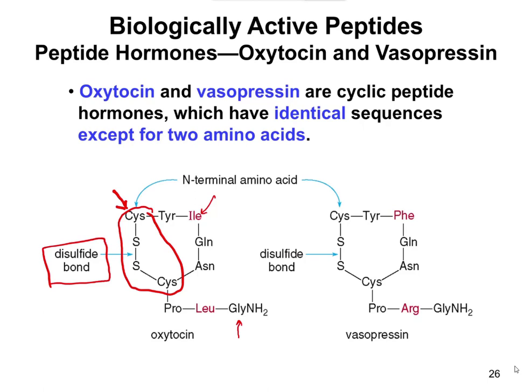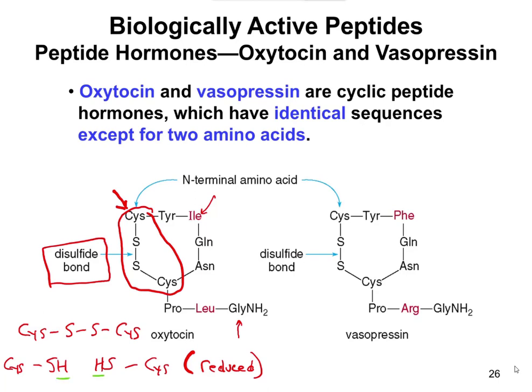Instead of a free SH group, a cysteine usually has an SH bond. If two cysteines are close to each other, what can happen is they form a C–S–S–C linkage. It's actually a redox reaction — the reduced form gains the extra hydrogens, since reduction is gaining. So the reduced cysteine has the extra H's, and the oxidized one is the one that forms the disulfide. That same redox terminology we learned earlier applies here in proteins, amino acids, and peptides as well.